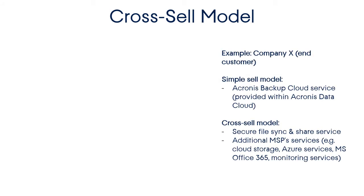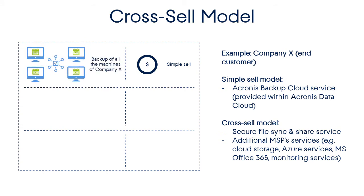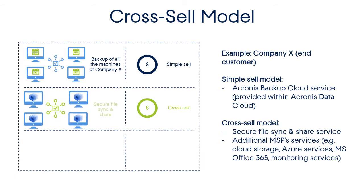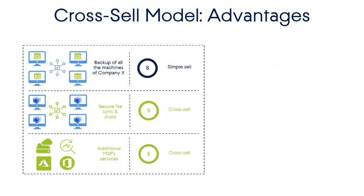In contrast to the simple sell model, in the case of the cross-sell model, the customer is offered not only a basic Acronis service, but some additional MSP services from other categories. Those additional services can be selected from the cohort of services provided within the Acronis Data Cloud Platform or from the overall portfolio of services offered by the MSP. For instance, the MSP can offer a company the Acronis backup service for all Windows machines as a basic service, and in addition offer either Acronis Data Cloud file sync and share or other services from the portfolio such as cloud storage, Office 365 subscriptions, or network monitoring services.